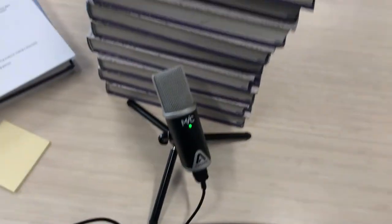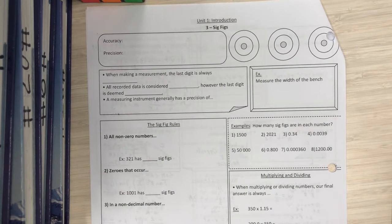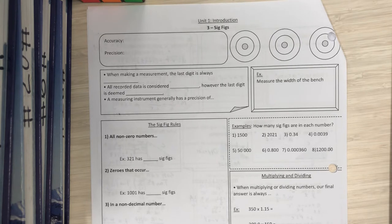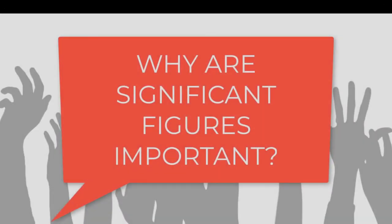Today we're going to be looking at significant figures and a couple of the other pieces that go with significant figures. One of those would be determining why we need to know how many decimal places we have in a final answer, and that comes down to both accuracy and precision of the measuring tools that we're using. We don't want to be too precise with our answer where we have five decimals when we are only given maybe one decimal place for our measured values.